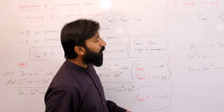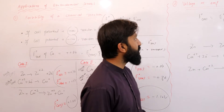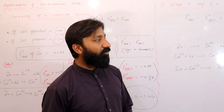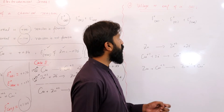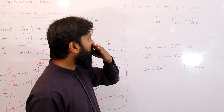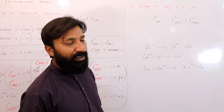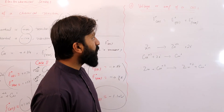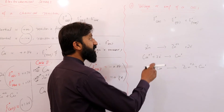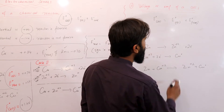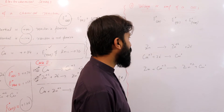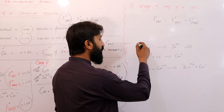Electrochemical Series की second application है: how can you calculate the voltage or EMF of a cell। किसी भी cell का voltage और EMF calculate करने के लिए: cell potential is equal to the sum of oxidation potential and reduction potential।